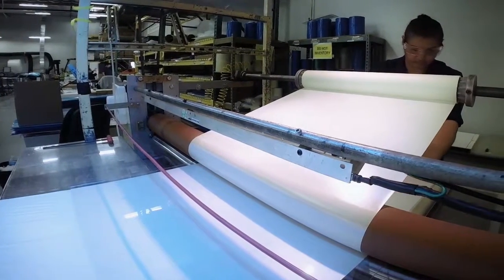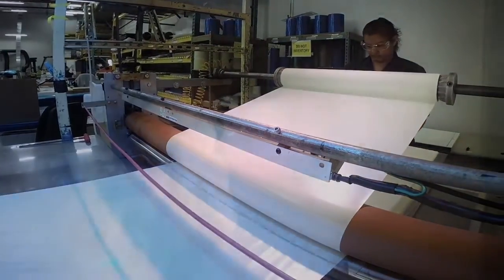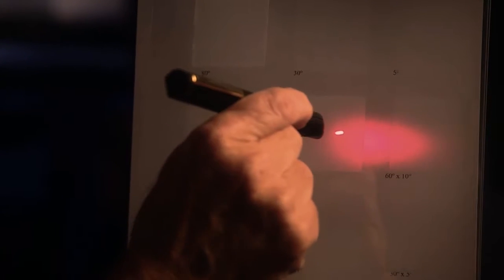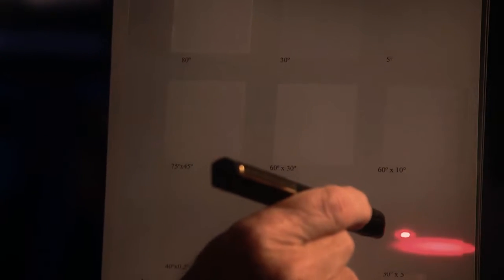Most of our products are used in transmission mode. What that means is basically we take a piece of plastic, we put the microstructure on, and when the light goes through it, it diffuses into the shape that the user wants.